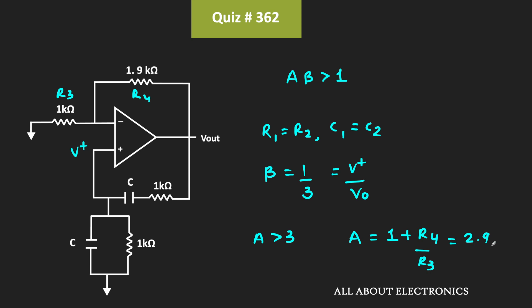Since the gain is less than 3, we will not get sustained oscillation. Since Aβ is less than 1, irrespective of the value of C, we will not get any sustained oscillations.